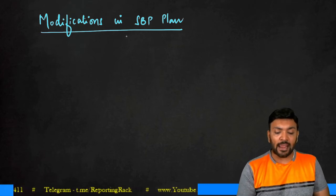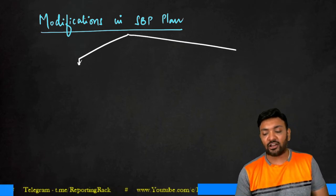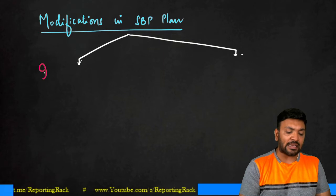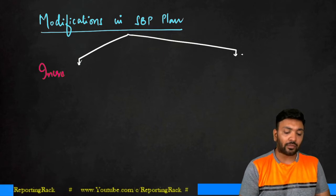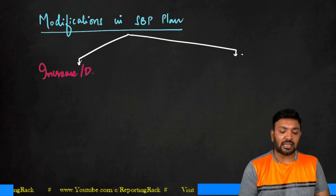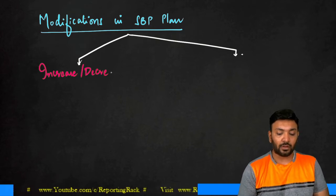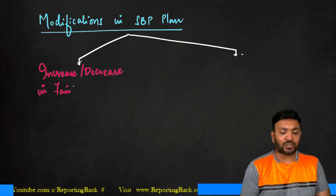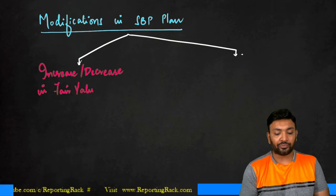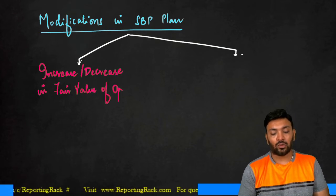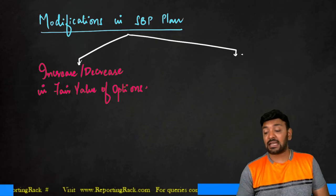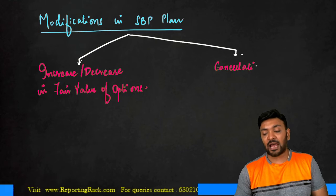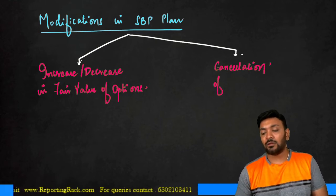So this way the modification can be broadly divided into two categories. The first category where there could be an increase or decrease in the fair value of options. Or sometimes there is a cancellation of a plan, that means the benefits of the plan are not eligible to be received, the plan is cancelled.